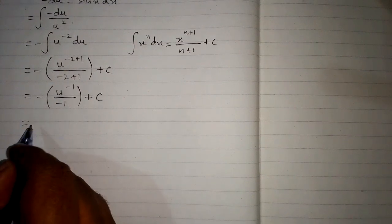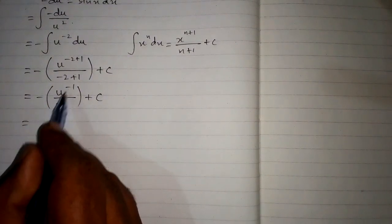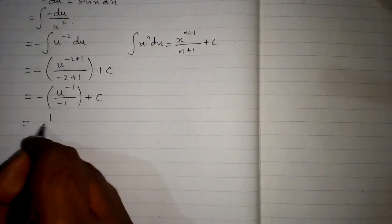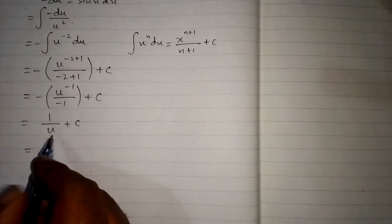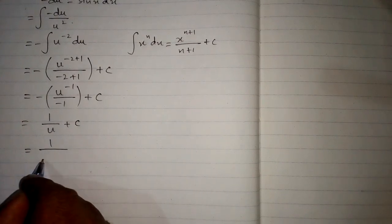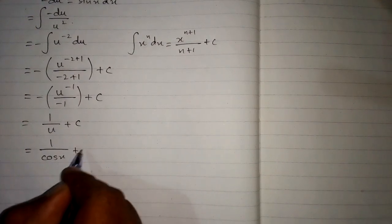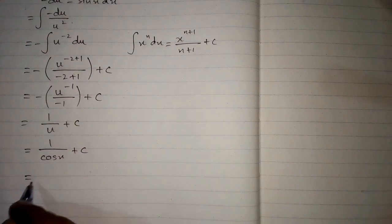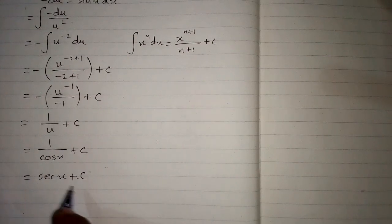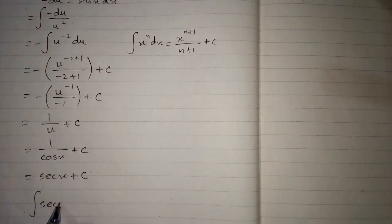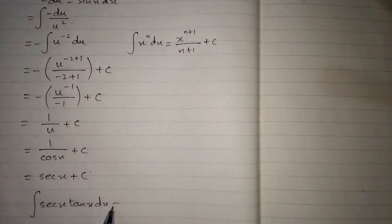Since minus multiplied by minus is plus, we have u to the power minus 1 upon 1, or 1 upon u plus c. Substituting back u equals cos x, we get 1 upon cos x plus c, which is sec x plus c. So the integral of sec x tan x with respect to x is equal to sec x plus c.